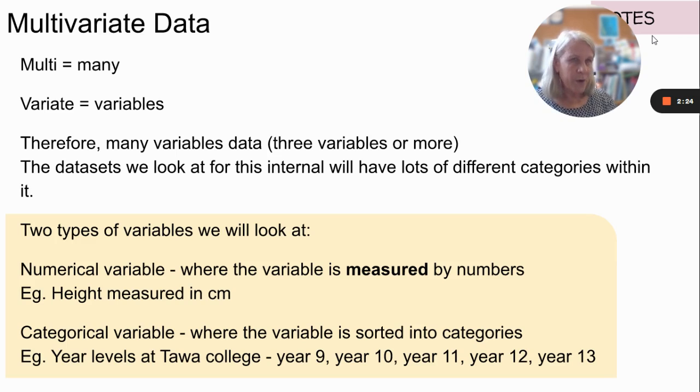And the other one is categorical variable. And that's the one that splits you up into different groups, like year 9, 10, 11, as it says on the screen, but also things like gender, ethnicity, where you come from. So it might be different cities, you could have Porirua versus Tawa or those sorts of things. So you're looking for those sort of things, and you're looking for something that interests you.